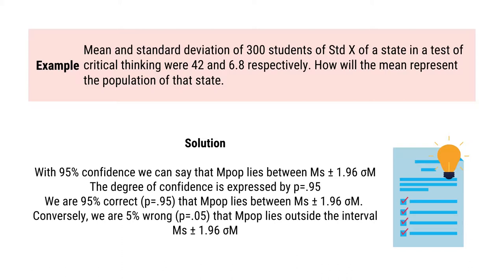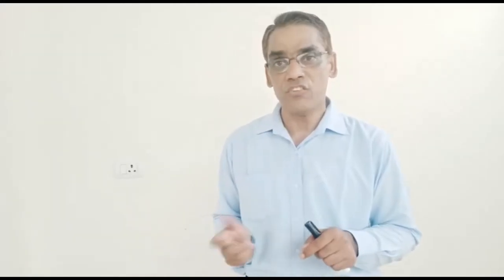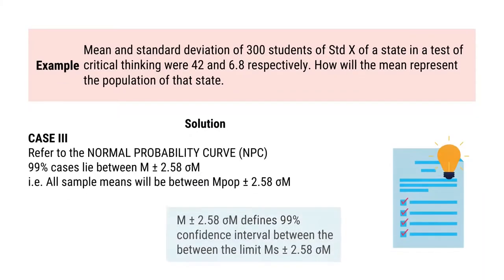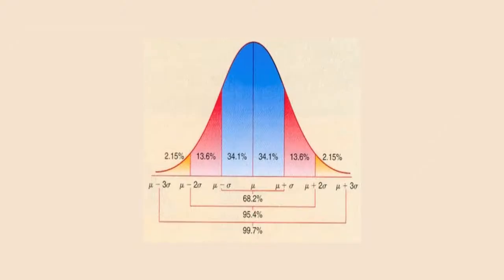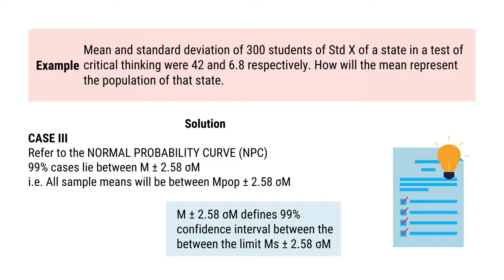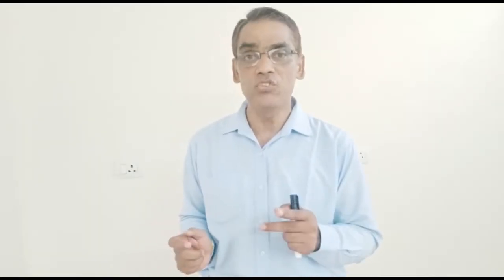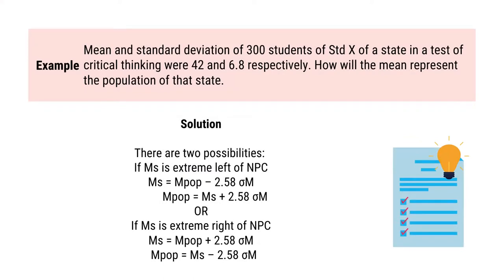Case 3: From the normal probability curve, 99% of cases lie between m plus minus 2.58 sigma m. All sample means will be between population mean plus minus 2.58 sigma m. M plus minus 2.58 sigma m defines the 99% confidence interval between the limits sample mean plus minus 2.58 sigma m. If the sample mean is at the extreme left — a negative deviation — then sample mean equals population mean minus 2.58 sigma m, so population mean equals sample mean plus 2.58 sigma m.